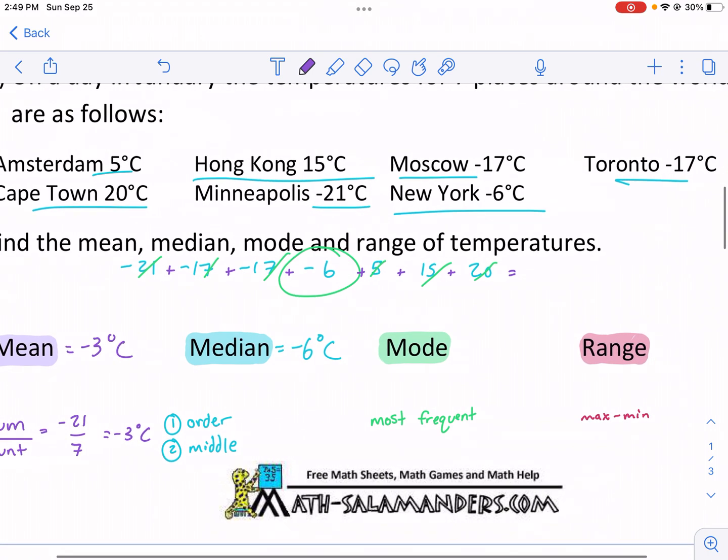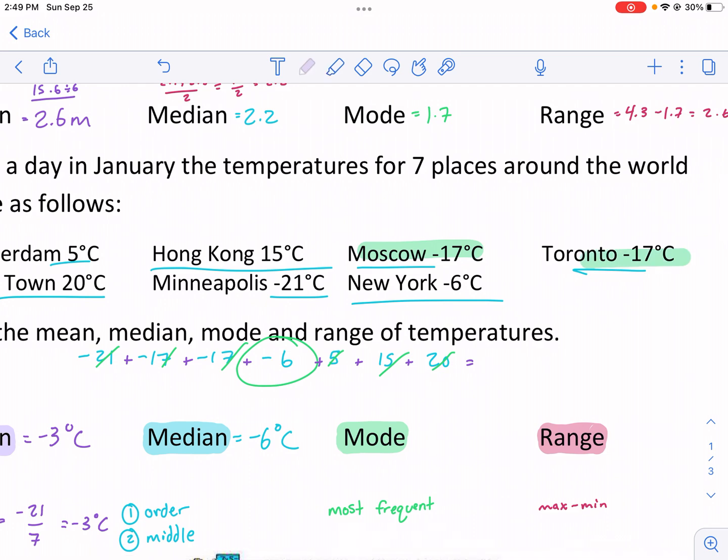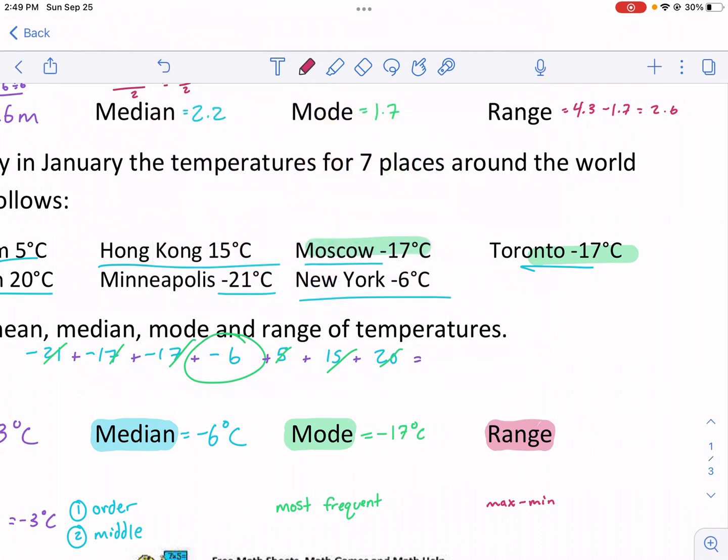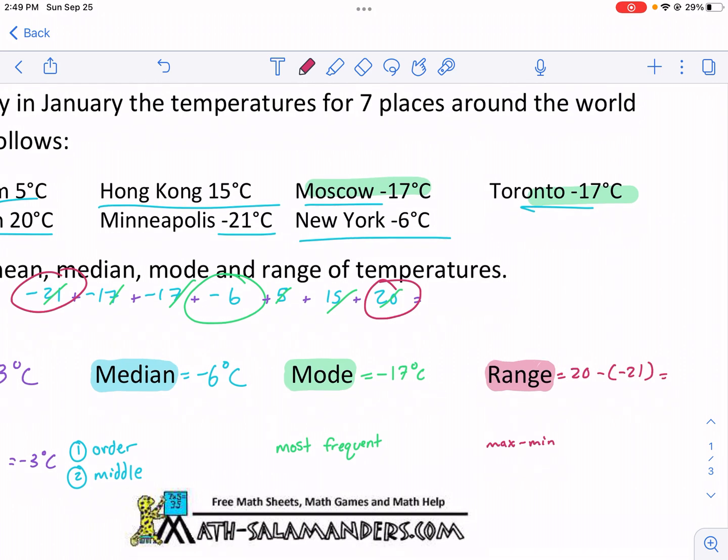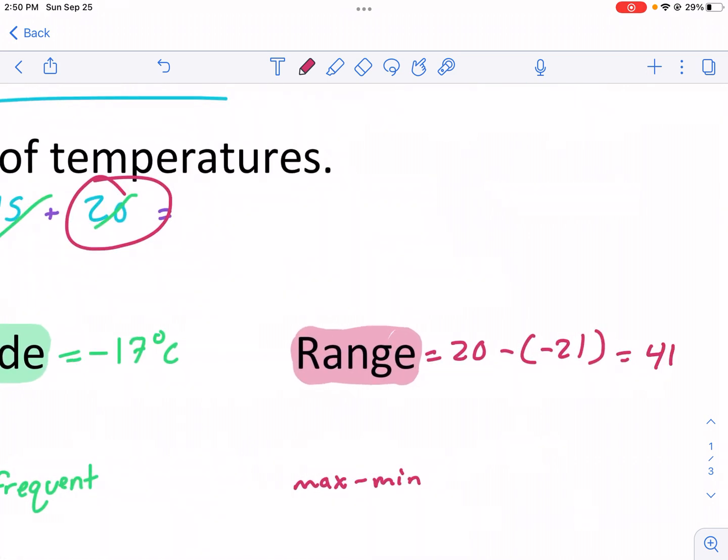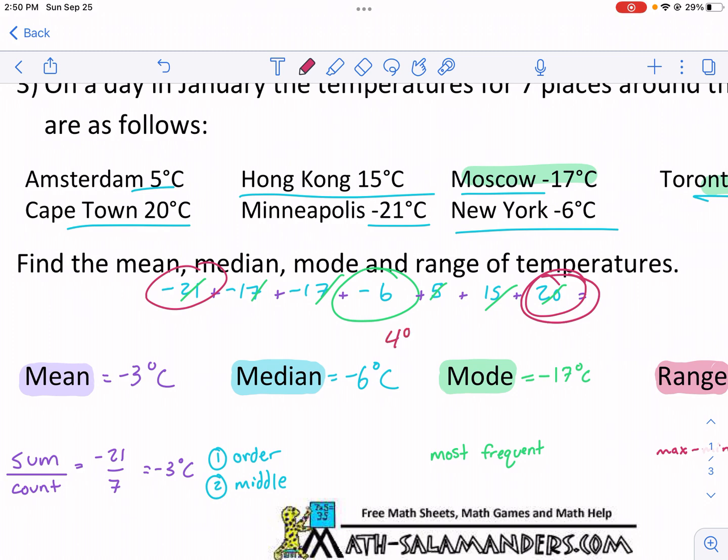Now mode, that's the one we see the most. Mode, think most. We see negative 17 degrees twice. Mode is always the easiest, so negative 17 degrees Celsius. And then the range, we need to take our biggest minus our smallest. Our biggest is 20, and I'm going to subtract our lowest. But it's a negative, and if you subtract a negative, it becomes a positive. So I have 20 minus negative 21, and that adds it. I get 41 degrees Celsius.